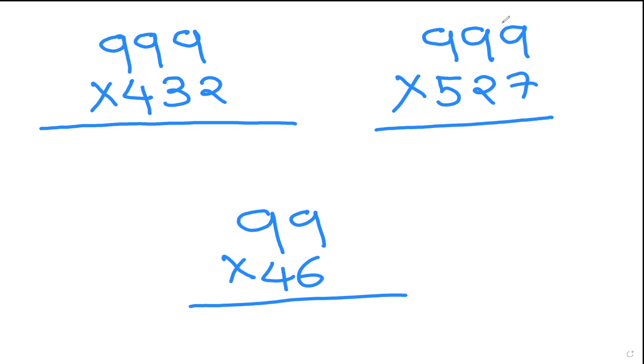Let's get started. Let's say if I got 999 times 432. So very first step is whatever is the number here, I go to minus one. So 432, I will take away one, so that will give me 431, which is absolutely easy to do.